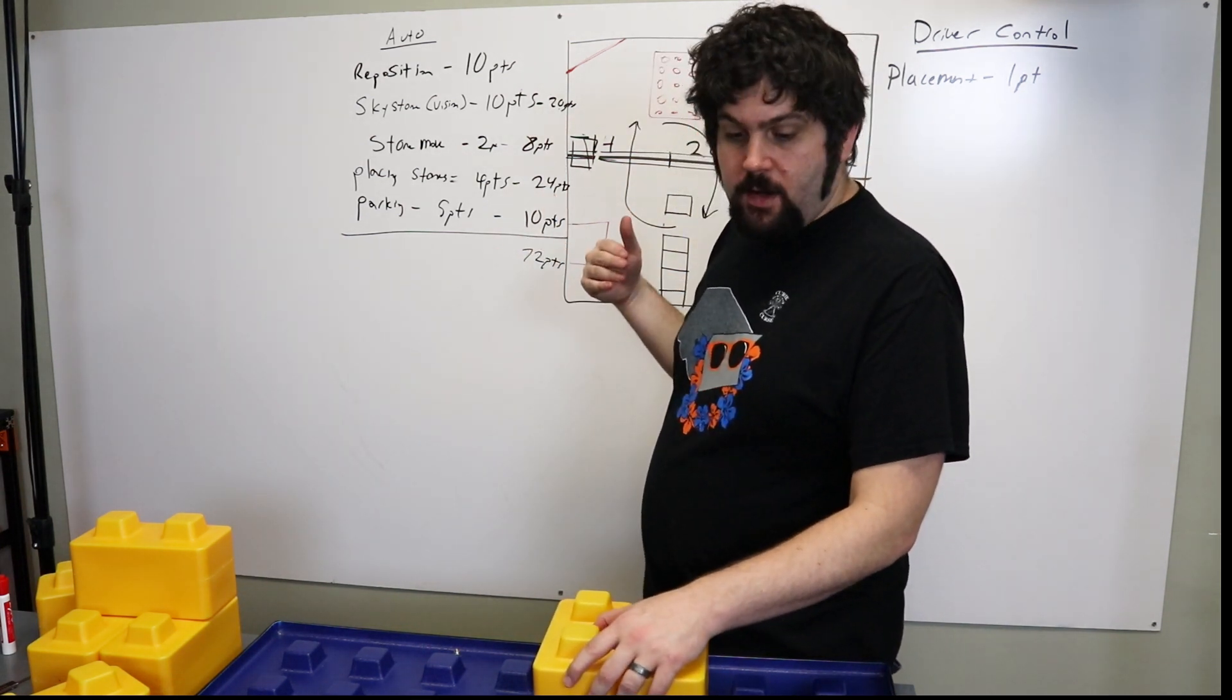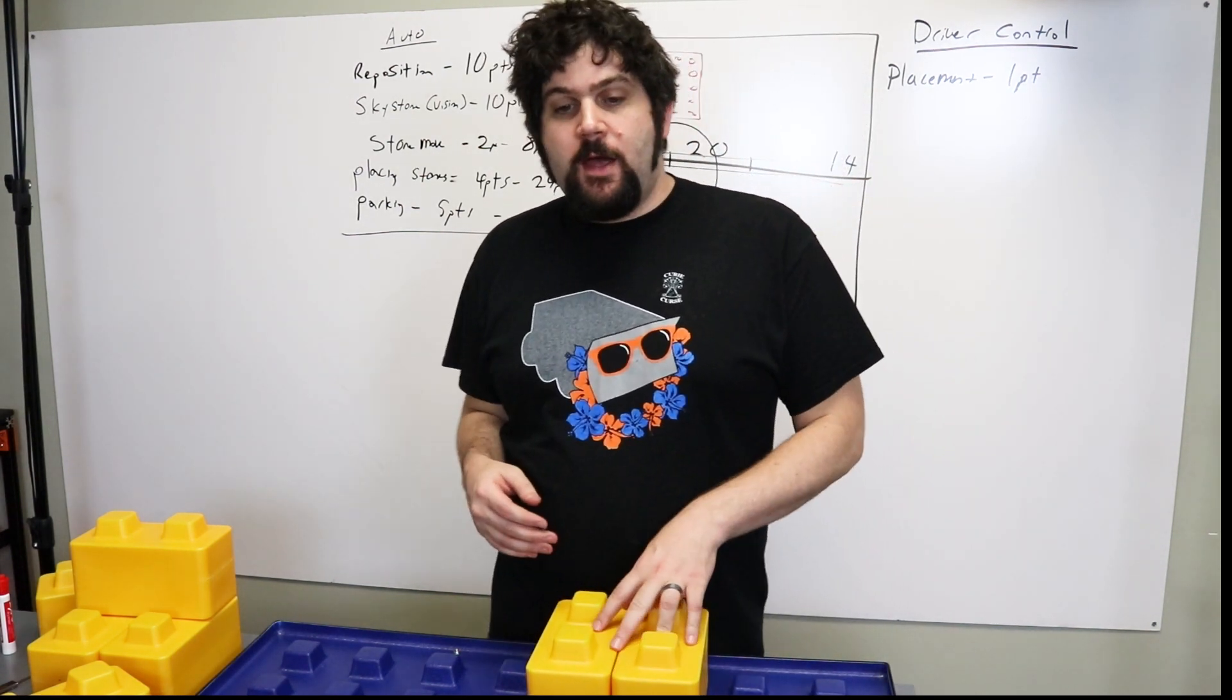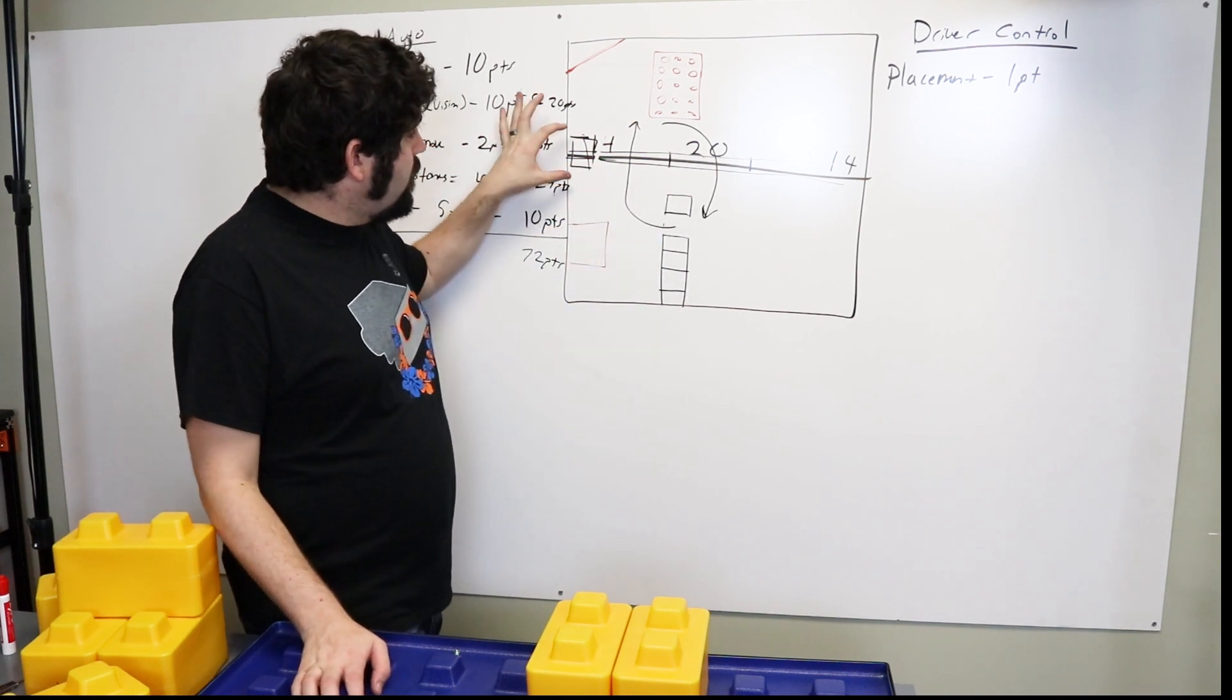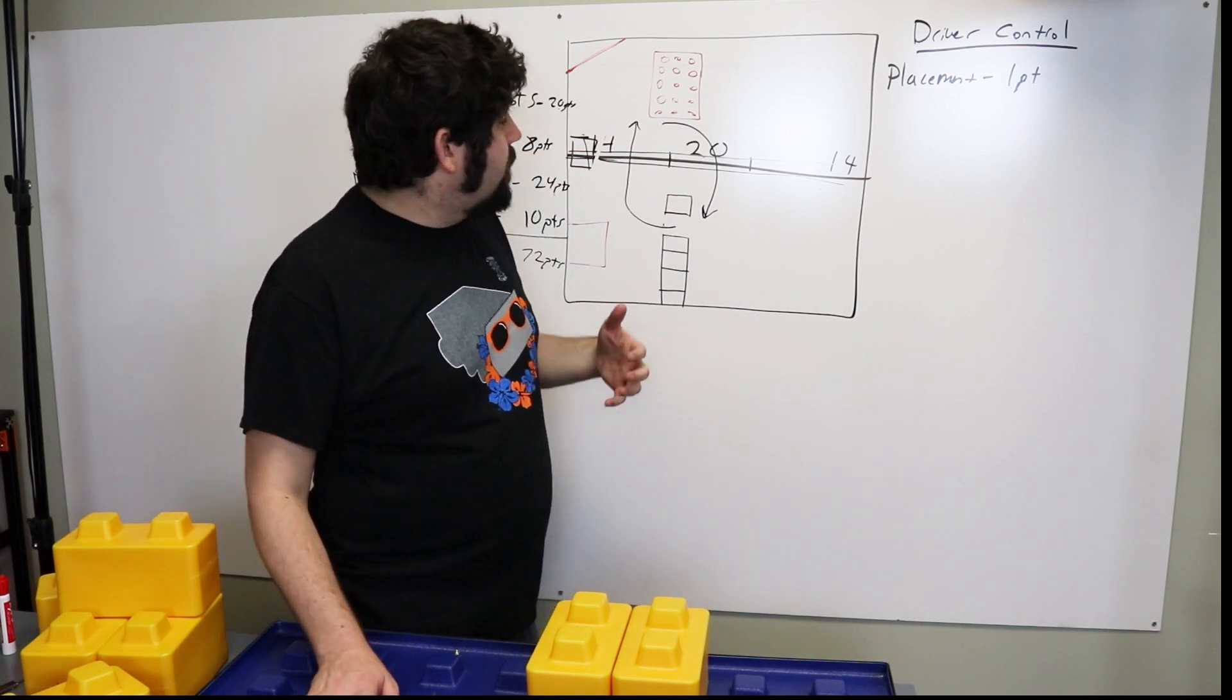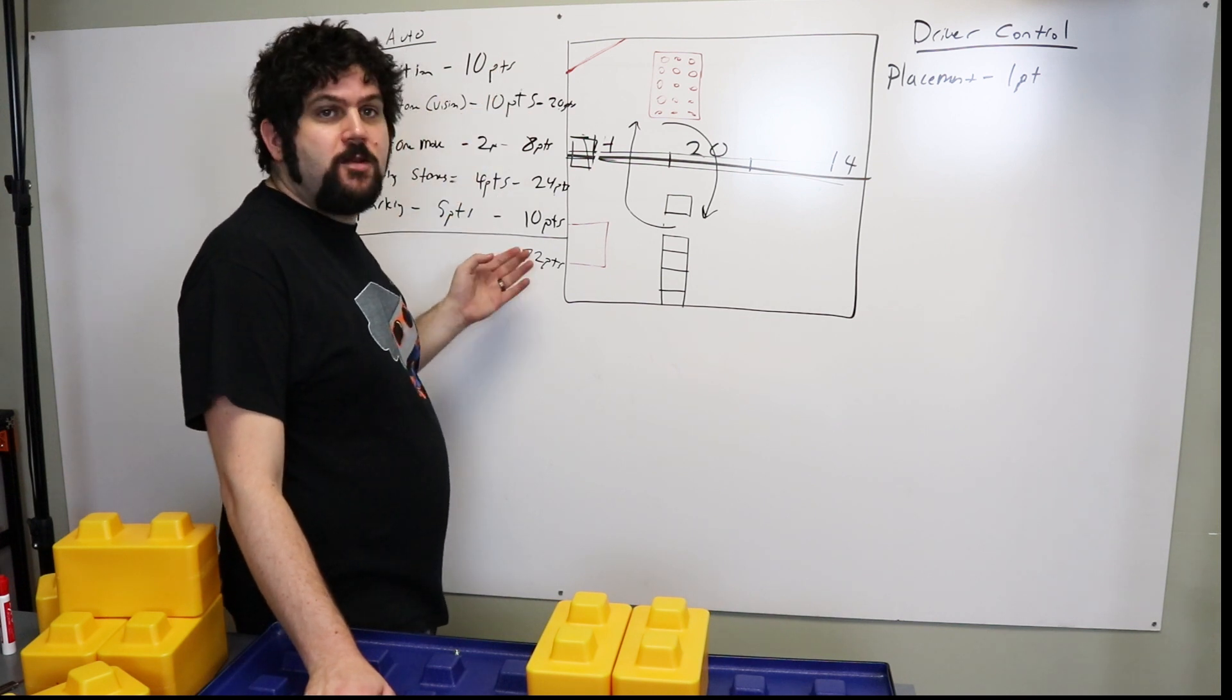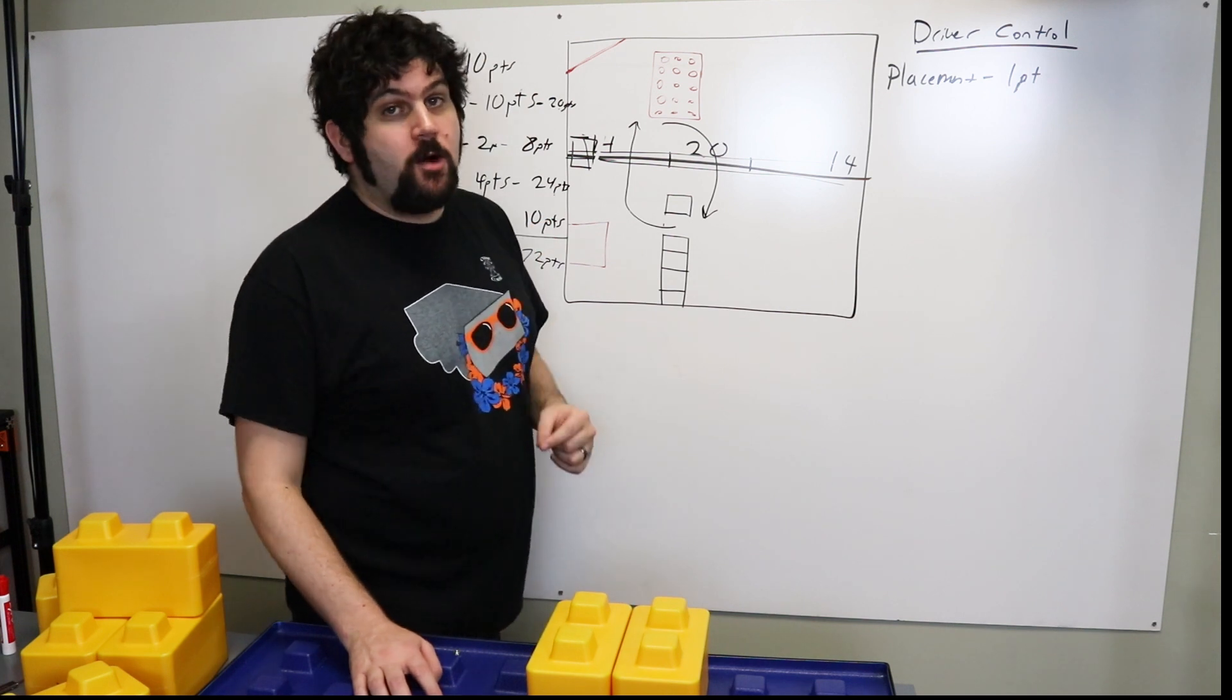And then lastly, there's a navigating bonus or parking. And basically there's a tape line that goes across the field. If you can end Autonomous touching that tape line or straddling that tape line, you'll get an additional five points. So when you add all of that up, what you'll see is the maximum points that you can get in Autonomous are 72 points. If you can get anywhere close to that, you're going to be in pretty darn good shape.